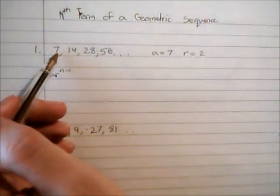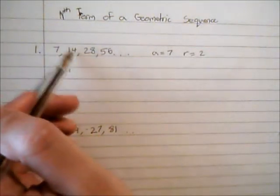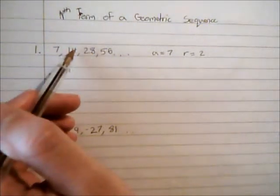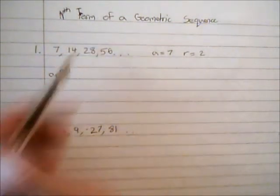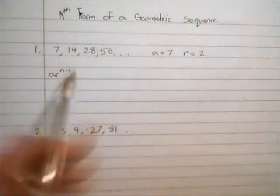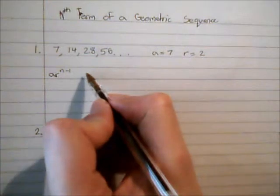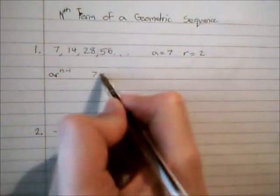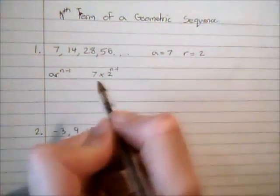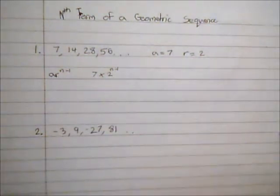So we've got our first term. Our second term is multiplied by 2. Our third term is multiplied by 2 again. Our fourth term by 2 again. So we're multiplying by 1 fewer 2 than there are terms in the sequence. So this is 7 multiplied by 2 to the power of n minus 1. And that gives us the nth term for our sequence.